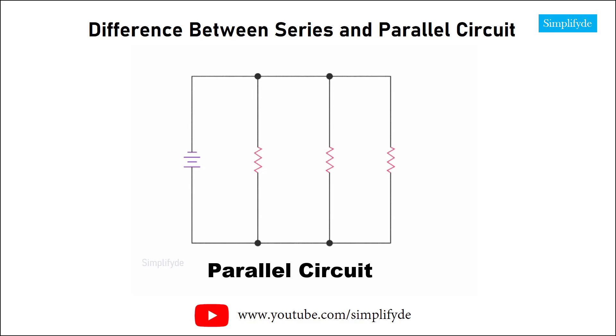The second basic circuit form is known as the parallel circuit. Like a series circuit, the parallel circuit has multiple components or loads. However, in a parallel circuit, the current has multiple paths along which to travel. Each of these paths is known as a branch.